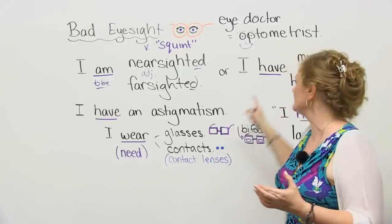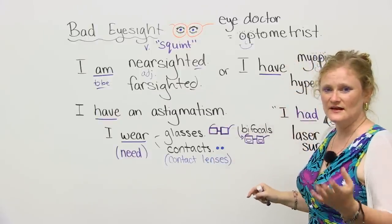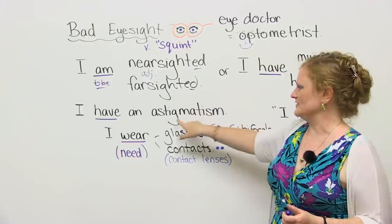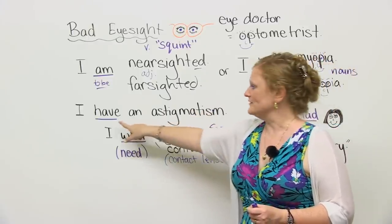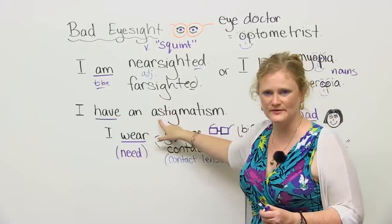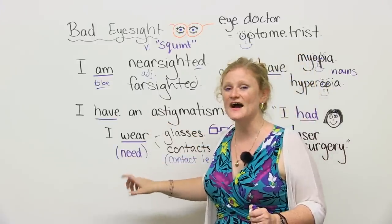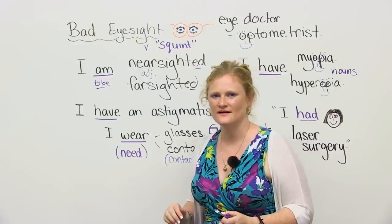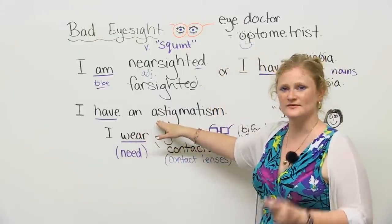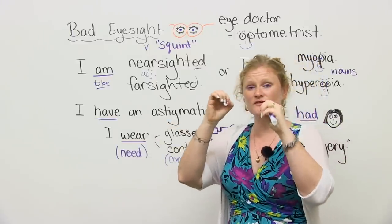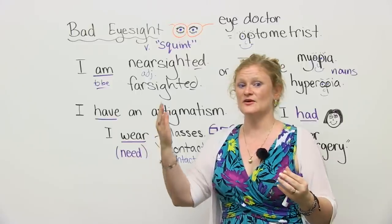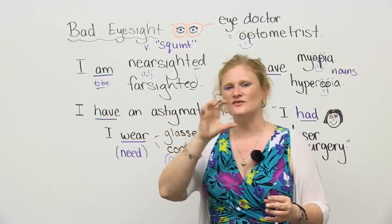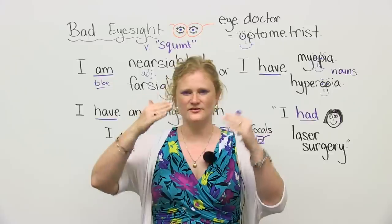Depending on what language you speak, maybe you use myopia or hyperopia in your language — that's easier, perfect. The next thing we have is another noun. We say "I have an astigmatism." I have an astigmatism. This means that your eyes do not focus well and everything is blurry. It doesn't matter if it's far away or close up — it's blurry. Things are doubled. It's like you've had a hundred beers and you're constantly having double vision.